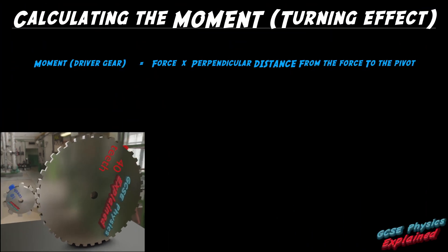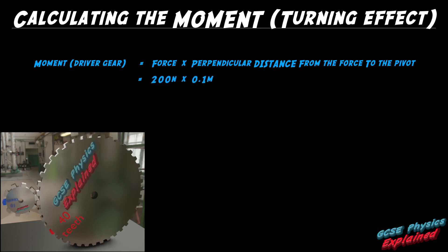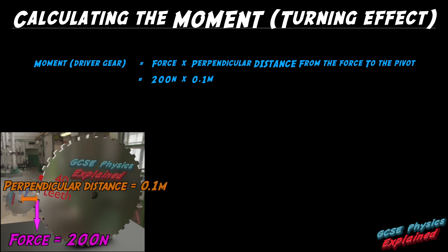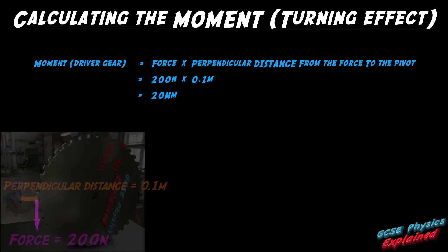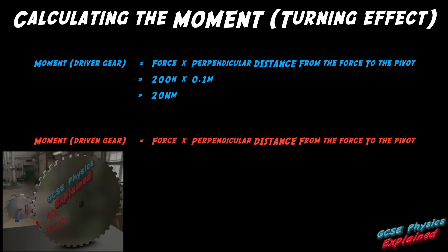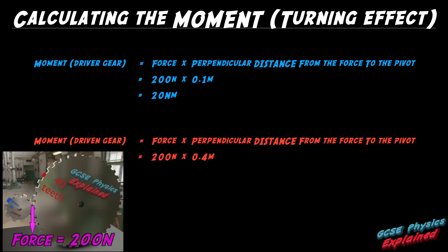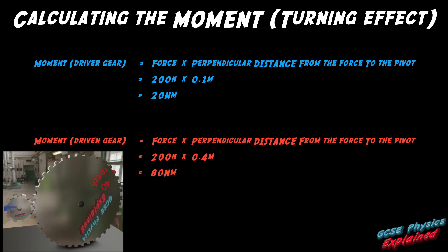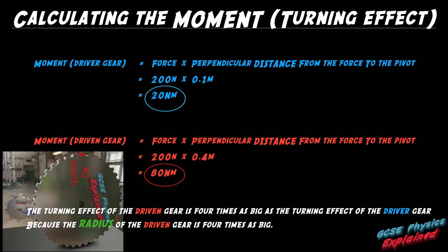The moment of the driver gear equals force times by perpendicular distance from the force to the pivot: 200 newtons times by 0.1 meters equals 20 newton meters. The moment of the driven gear equals 200 newtons times by 0.4 meters equals 80 newton meters. The turning effect of the driven gear is 4 times as big as the turning effect of the driver gear, because the radius of the driven gear is 4 times as big.